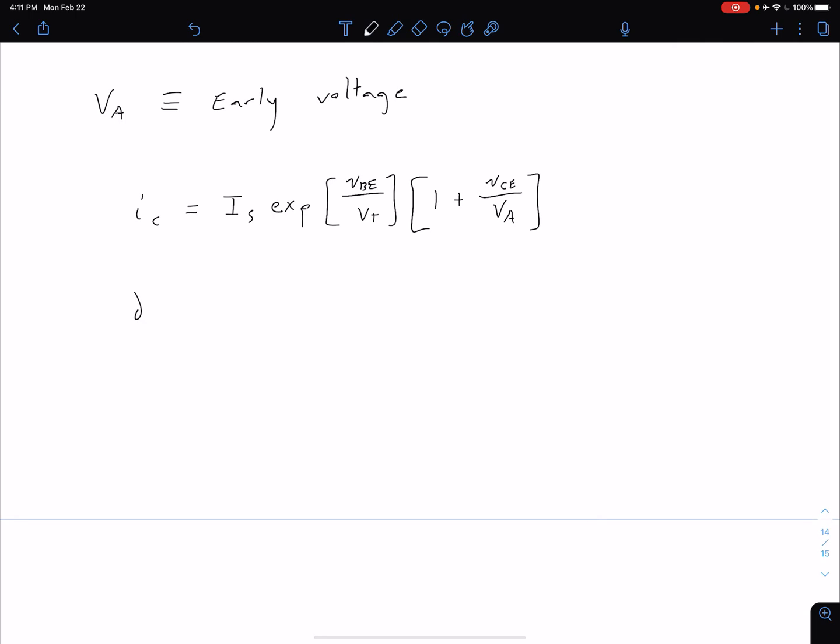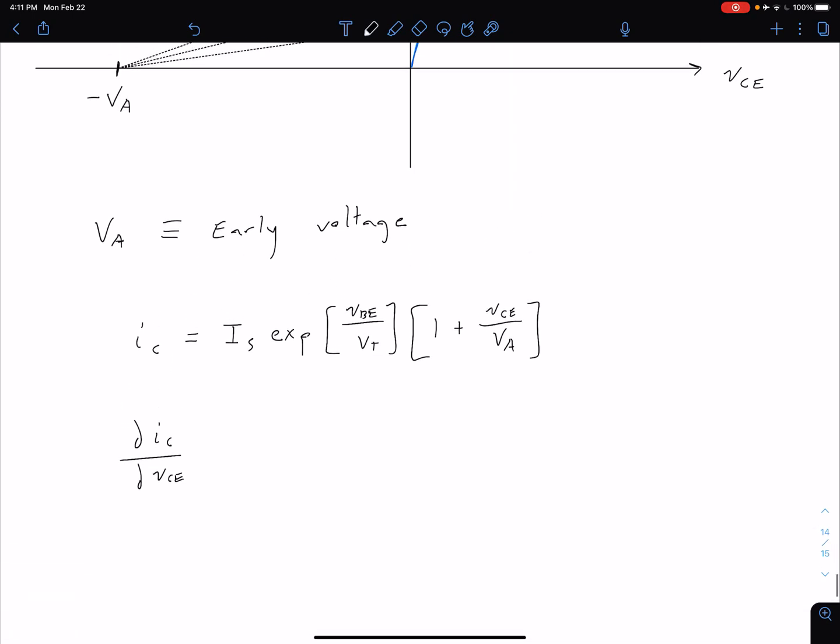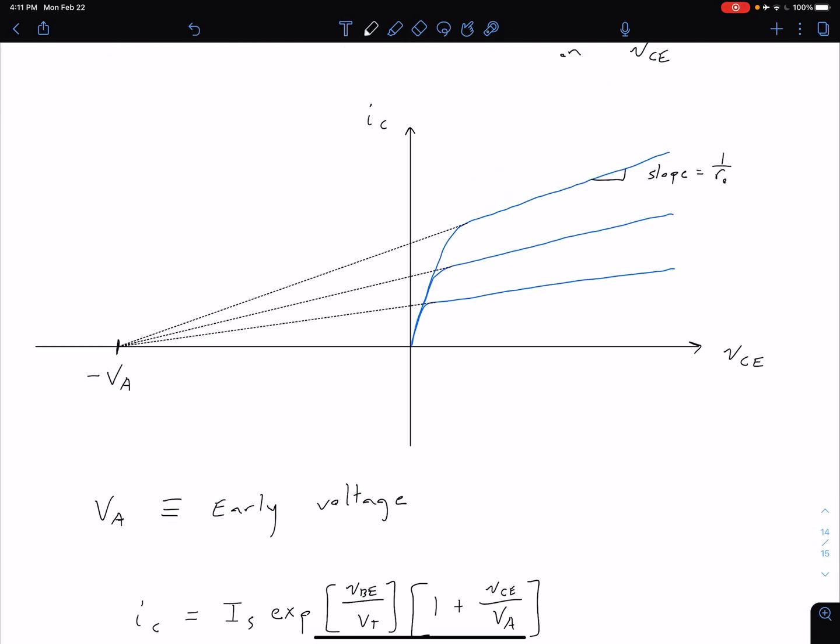So we can say our partial of IC with respect to our VCE but we do have to make one other stipulation here is that we have to have a constant VBE.